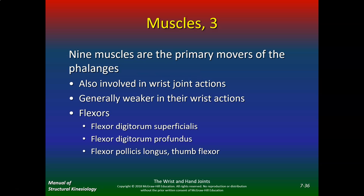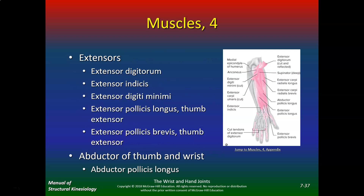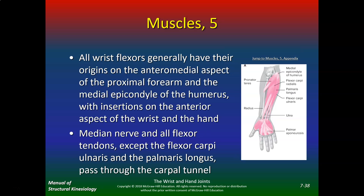Nine muscles are the primary movers of the phalanges and are also involved in wrist joint actions, though generally weaker in wrist actions. The flexors are flexor digitorum superficialis, flexor digitorum profundus, and flexor pollicis longus (thumb flexor). The extensors are extensor digitorum, extensor indicis, extensor digiti minimi, extensor pollicis longus, extensor pollicis brevis, and abductor pollicis longus.